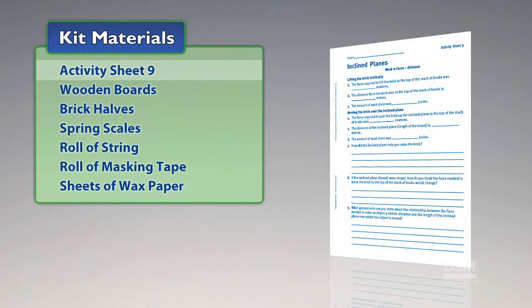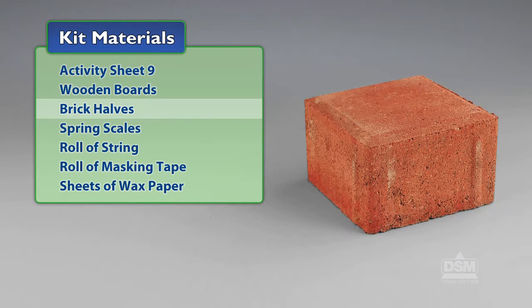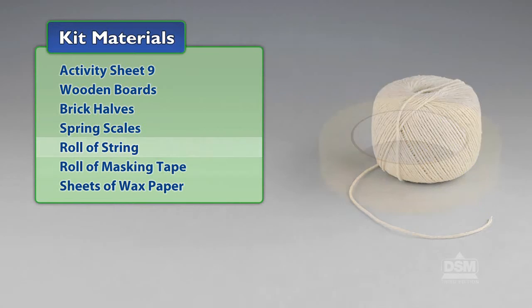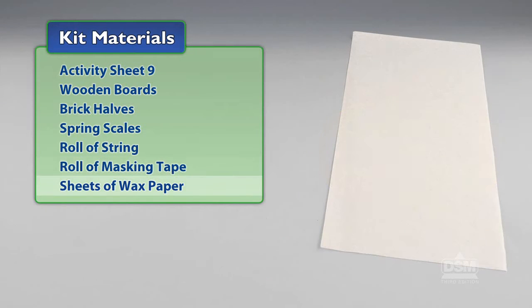You will need the following materials from the kit: activity sheet nine, wooden boards, brick halves, spring scales, roll of string, roll of masking tape, and sheets of wax paper.